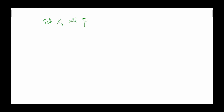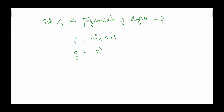Another non-example: the set of all polynomials of degree exactly equal to 3. Take p₁(x) = x³ + x + 1 and p₂(x) = -x³ + 2x + 1. Their sum is 3x + 2, which is not a polynomial of degree 3. So addition is not a binary operation on this set. Note: degree less than or equal to 3 is a vector space, but degree exactly equal to 3 is not.